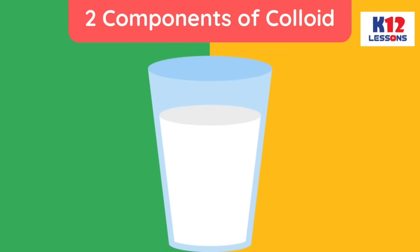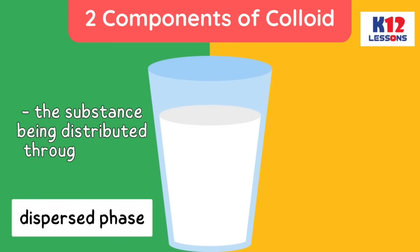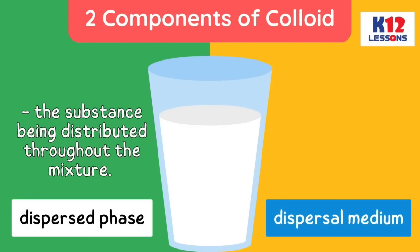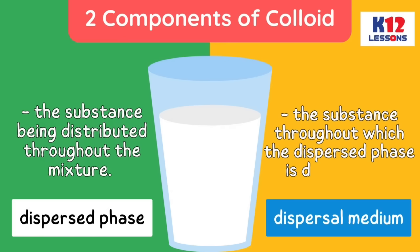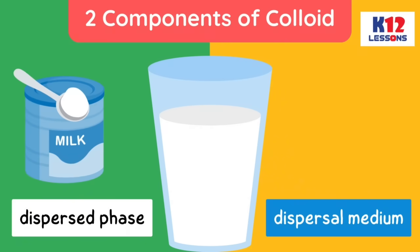A colloid has two components. The dispersed phase is the substance being distributed throughout the mixture. The dispersal medium is the substance throughout which the dispersed phase is distributed. In a milk solution, milk represents the dispersed phase while water represents the dispersion medium.